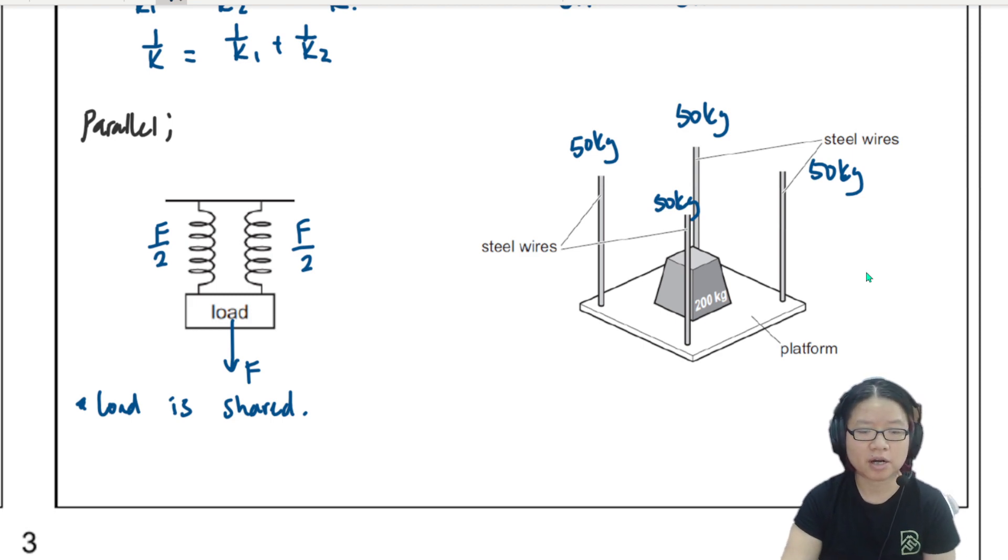So in this case, since the load is shared, I can then form the equation that the force in spring one, F1 + F2 is equal to F. So if they are identical wires like the steel wire or the identical spring, then it will be half-half. So it is half-half only if both springs are identical. If the springs are not identical, then it is a certain ratio.